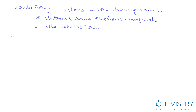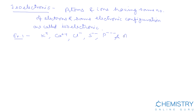Example 1: K⁺ (potassium ion), calcium ion, chloride ion, sulfide ion, phosphide ion, and argon are isoelectronic because they have the same number of electrons and the same electronic configuration.